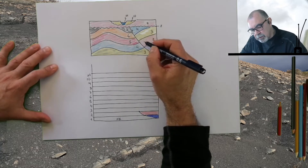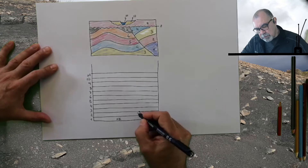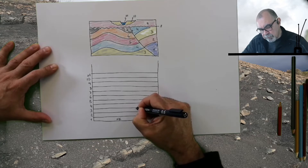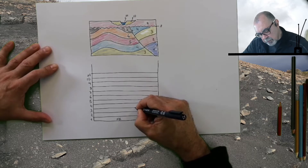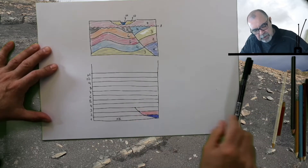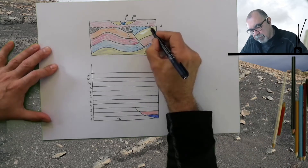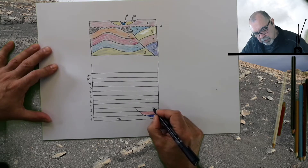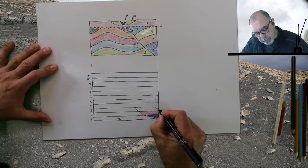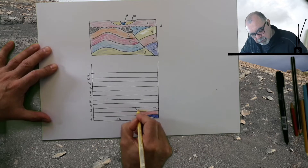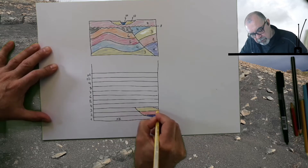Then we have unit three. The base is more or less here, and the upper part of unit three is more or less here. So I can trace a line and put some color showing the extension of unit three. However, the upper part of unit three in this area is missing — we are going to explain that later on.